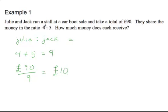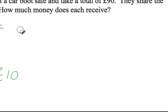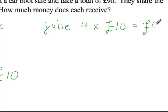She takes home 4. I actually don't need this here. So Julie will get 4 parts times 10 pounds for every part, and that gives her 40 pounds total.